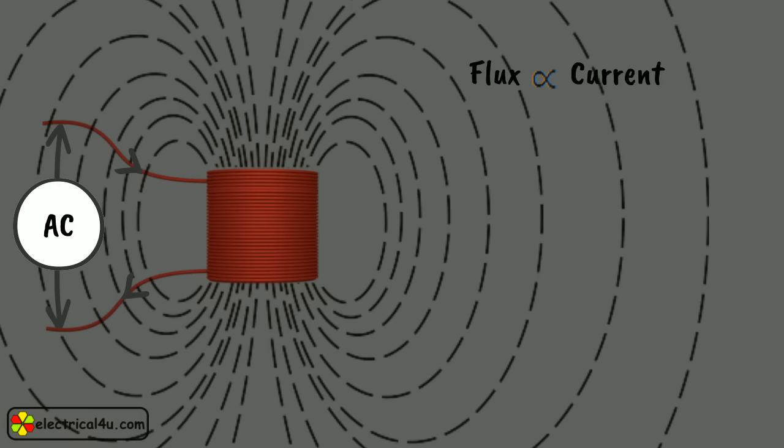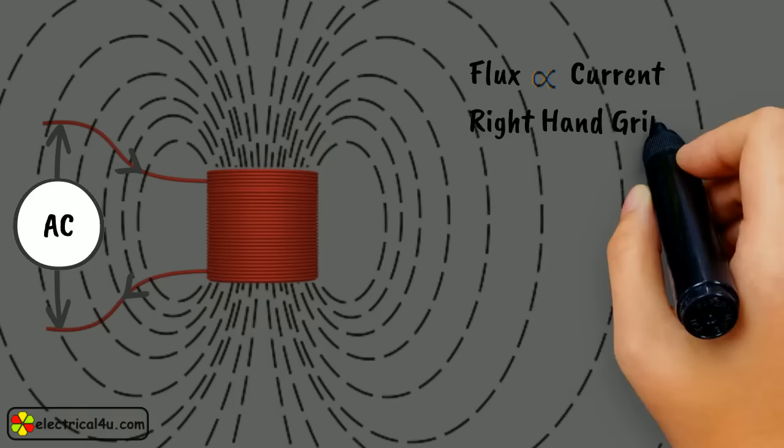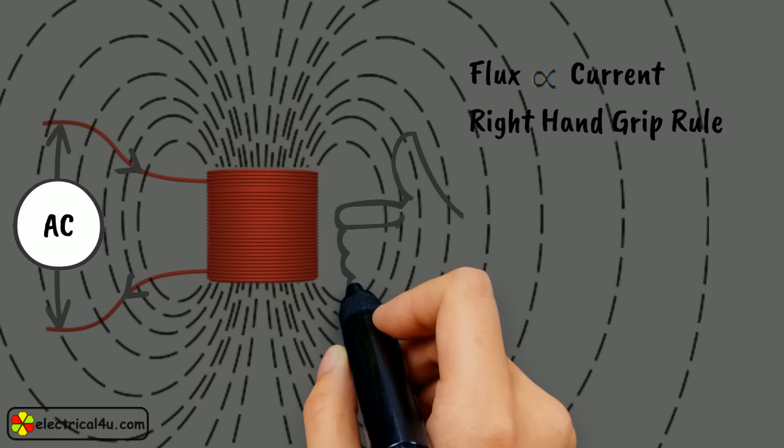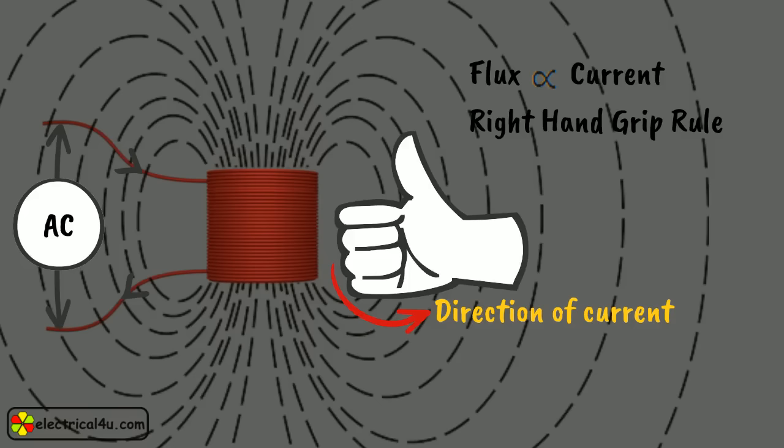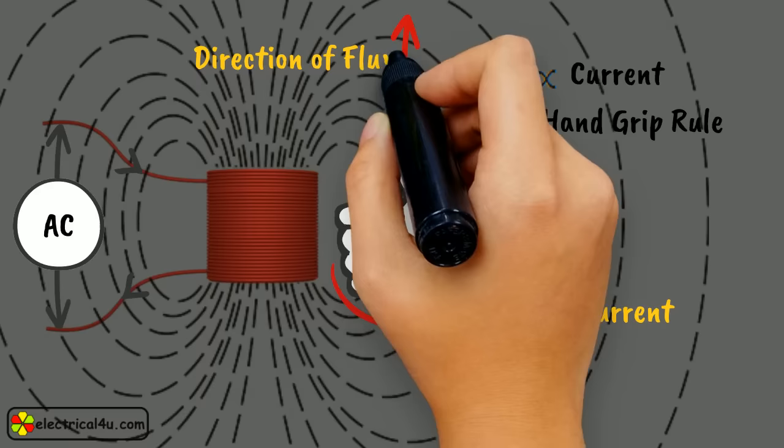The direction of the current in the winding can be found out by applying the right-hand grip rule. This rule states that when we grip our right hand, stretching the thumb along the axis of the coil or winding and the other four fingers along the direction of current in the coil,